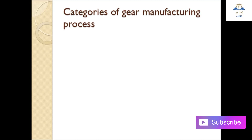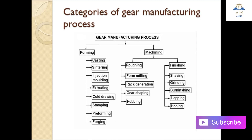The gear manufacturing process is widely distributed in two stages: forming and machining. Under forming we have casting, sintering, injection molding, extruding, cold drawing, stamping, performing, and forging.